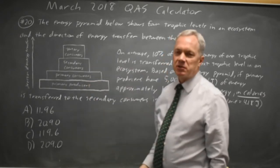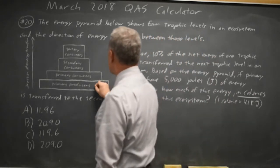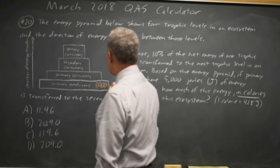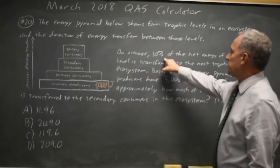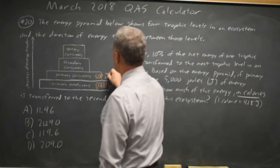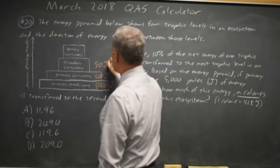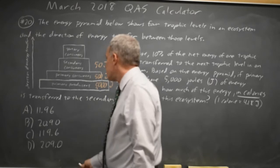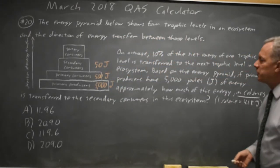But they ask for that amount in calories rather than joules. Primary producers are 5,000 joules. Primary consumers are 10% of that, so net energy is 500 joules. Secondary consumers are 10% of that—500 is 50 joules. We want to convert those 50 joules to calories using 1 calorie equals 4.18 joules.